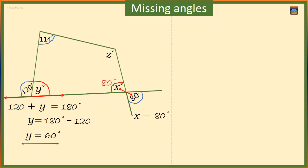We know that x plus y plus 114 degrees plus z must be equal to 360 degrees.